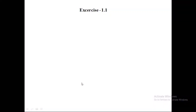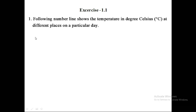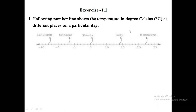Let us try to solve some questions from Exercise 1.1. Question number one: the following number line shows the temperature in degrees Celsius at different places on a particular day. This is the number line showing the different temperature readings of five cities of India: Lahul Spiti, Srinagar, Simla, Ooty, and Bangalore.